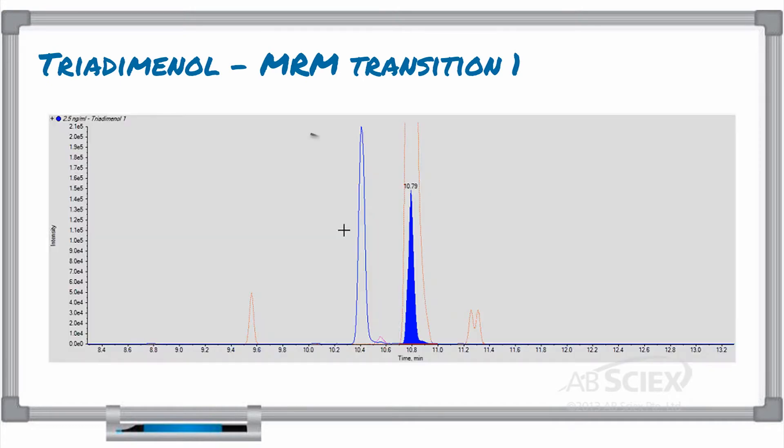In this experiment, we want to use our MRM-cubed transitions to quantify the compound triadminol in bean samples. In the case of this compound, a structural isomer with identical MRM transitions appeared in the chromatogram at a retention time of 10.4 minutes for both selected MRM transitions.